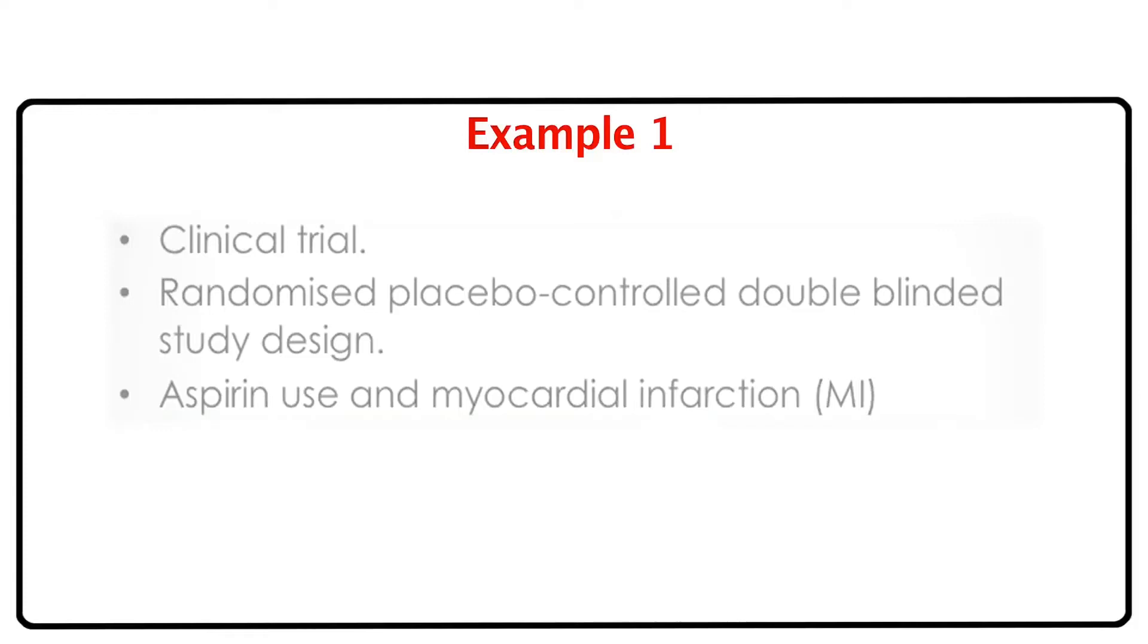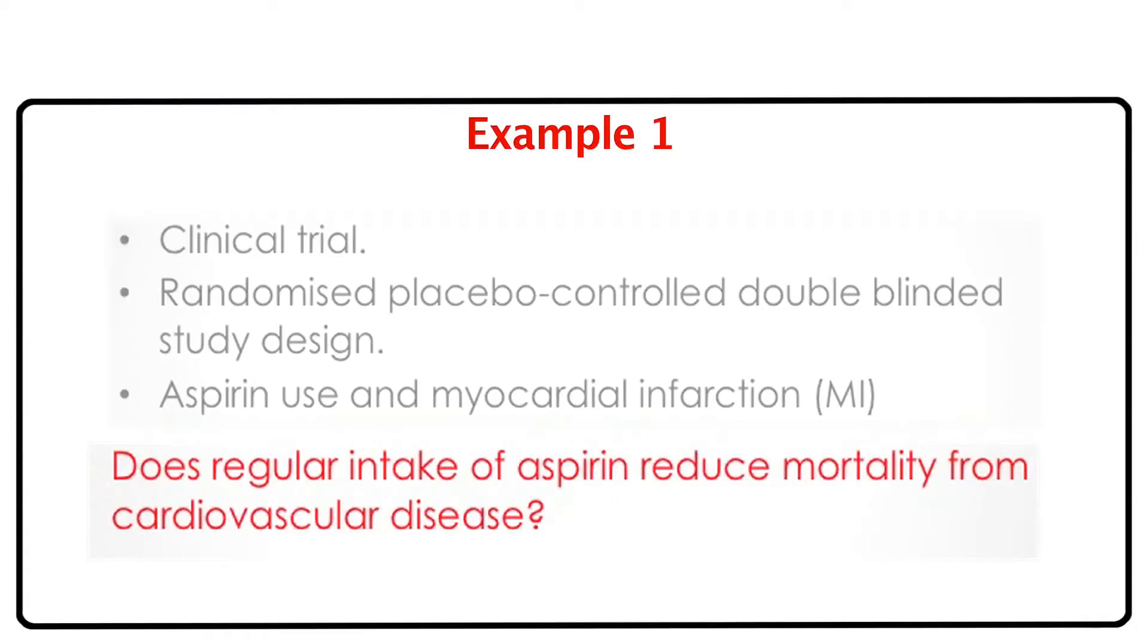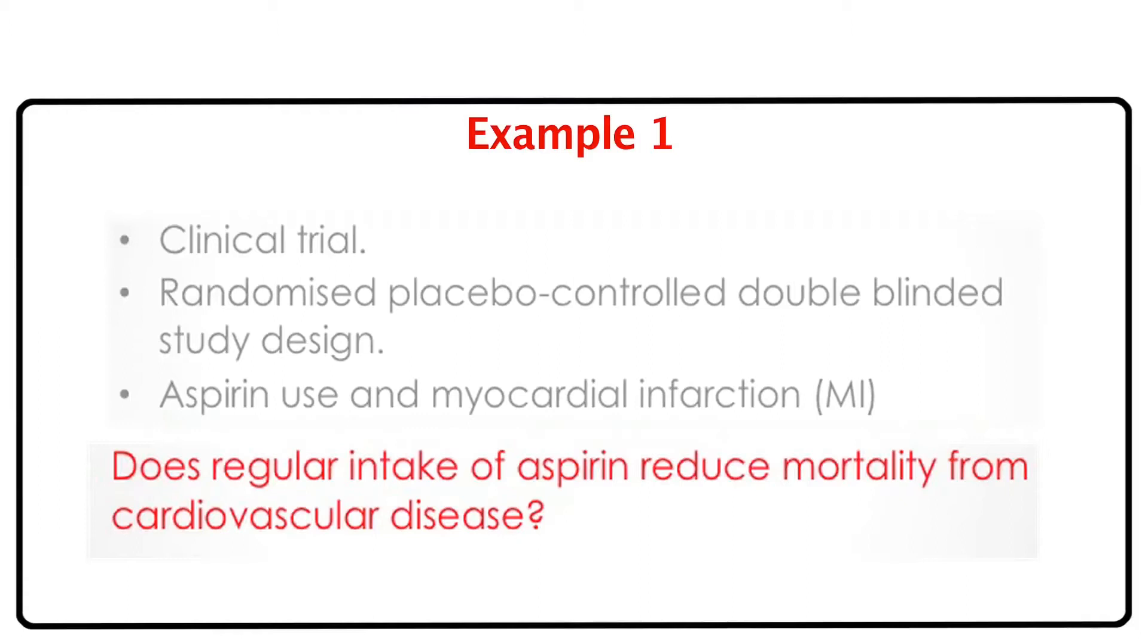For now, let us look at a clinical trial of aspirin use and myocardial infarction. So my question of interest is, does regular intake of aspirin reduce mortality from cardiovascular disease? So here is the data. This is data which you might be familiar with from your undergraduate classes. It is the usual 2x2 table where along the rows we have looked at whether or not someone has been given placebo or aspirin, and along the columns we have looked at whether or not they suffer from myocardial infarction. So for example, 189 people on placebo experienced myocardial infarction. The source of this data is from a study of the ongoing Physicians' Health Study which was published in the New England Journal of Medicine.